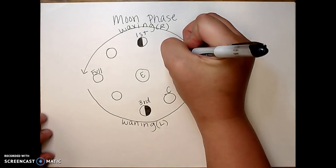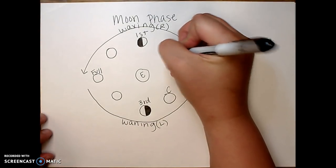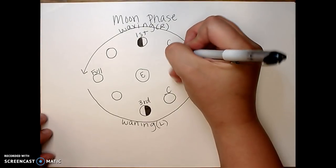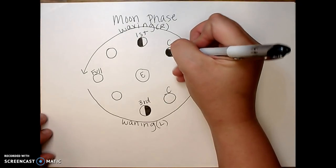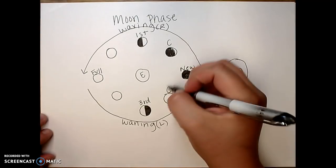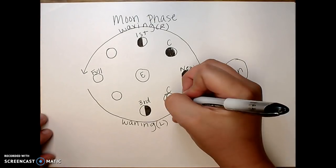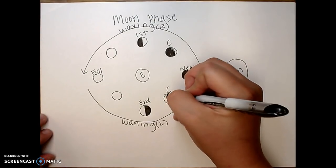So this one, I'm going to draw my light on the right for my waxing crescent. On this one, I'm going to draw my light on the left for my waning crescent.